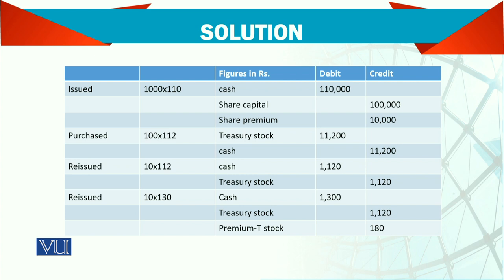Next, you reissue at Rs. 130 per share, but the cost was Rs. 112. For 10 shares at Rs. 130, cash received is Rs. 1,300. Trade Stock is credited at Rs. 112 per share (cost method). The balance — the premium — goes to a separate account called Premium on Trade Stocks, which is part of the balance sheet under shareholder equity.